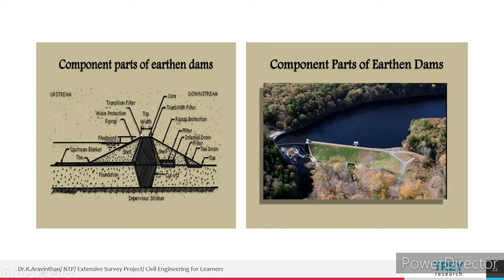The components of the earthen dam include a top width and a bottom width with slopes. According to standards, water is stored on the upstream side up to the free board level. Water above the free board is taken to the waste weir — some water is stored, and for safety, the remaining water is taken through the waste weir.